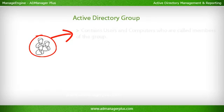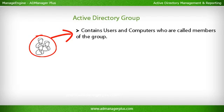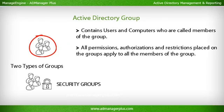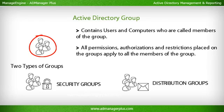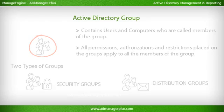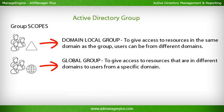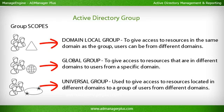An Active Directory Group contains users and computers called members. All permissions, authorizations, and restrictions placed on the group apply to all its members. There are two types of groups: Security Groups, used to grant permissions and set restrictions on users to resources; and Distribution Groups, used to send email messages to a group of users. Group scopes include Domain Local Group — to give access to resources in the same domain, where users can be from different domains; Global Group — to give access to resources in different domains for users from a specific domain; and Universal Group — to give access to resources in different domains for users from different domains.